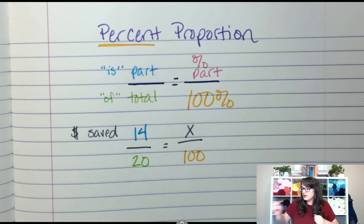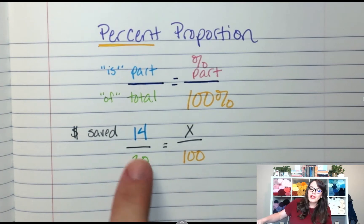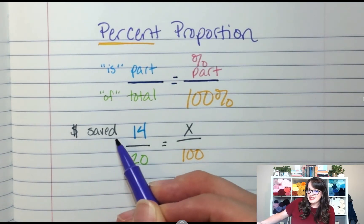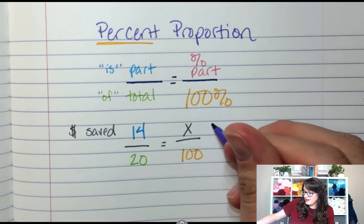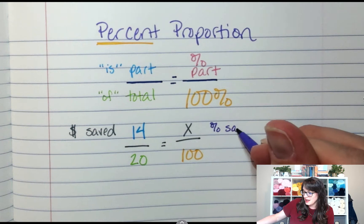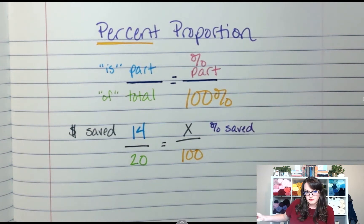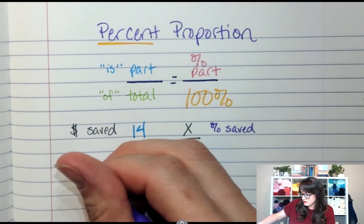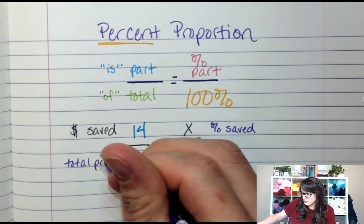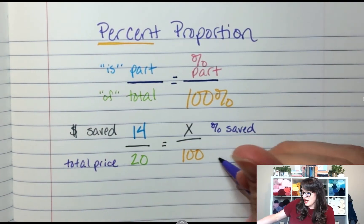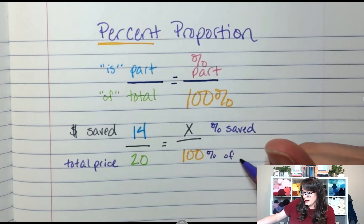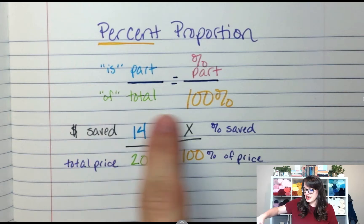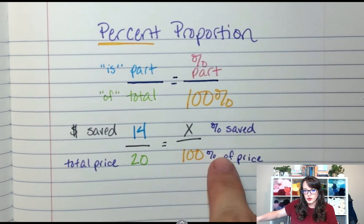Now that we have our proportions set up, the money saved is over here. This is going to be the percent saved. That's how those two things line up. This was the total price, because that's 100% of the price. So that relationship: saved, saved, total, total.